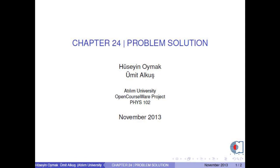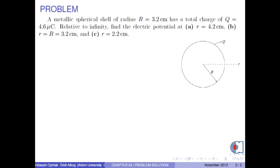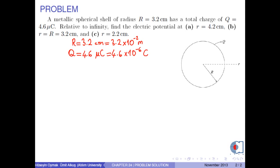Hi there, I am Umit Akush. In this video, we will solve one problem in chapter 24. A metallic spherical shell of radius R equal to 3.2 centimeters has a total charge of q equal to 4.6 microcoulombs. Relative to infinity, find the electric potential at radial distance r equal to 4.2 centimeters, 3.2 centimeters, and 2.2 centimeters.